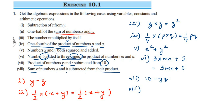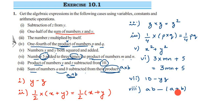The eighth and last question: sum of numbers a and b subtracted from their product. The sum of a and b is (a + b). Their product is a multiplied by b, which is ab. From ab we subtract the sum (a + b), so we place it in a bracket. The answer is ab − (a + b). That's all eight questions — I hope this is clear. If you have any doubt, drop a comment. Thank you for watching!